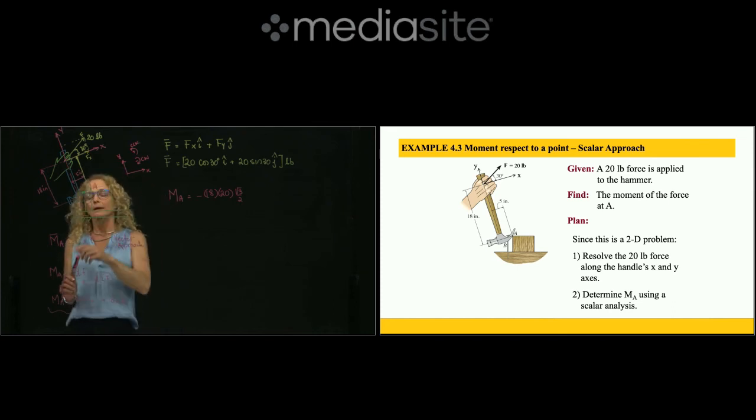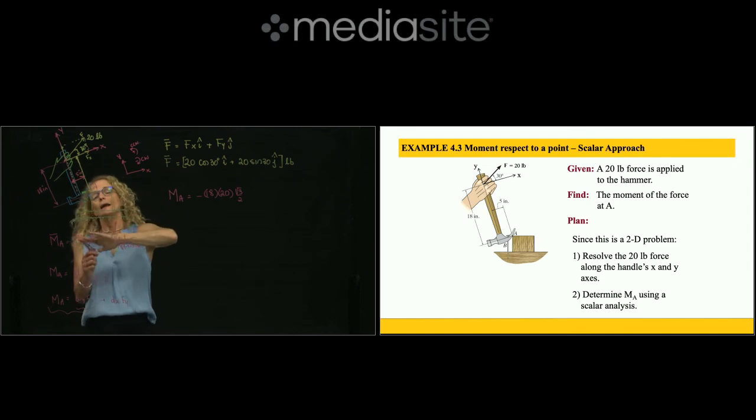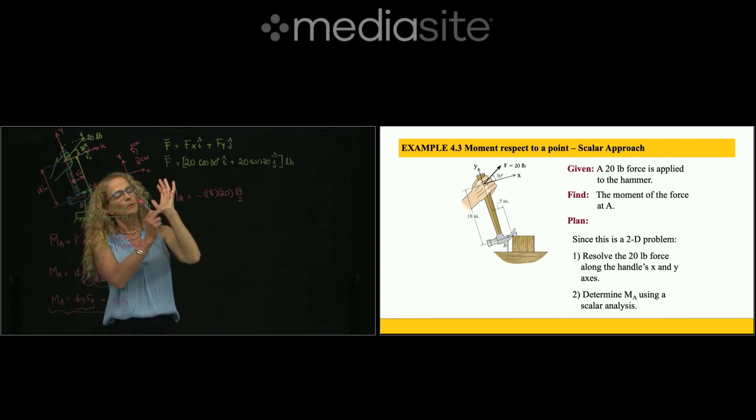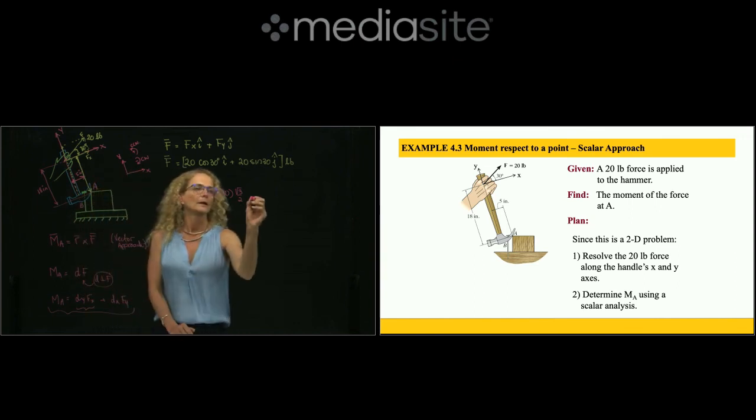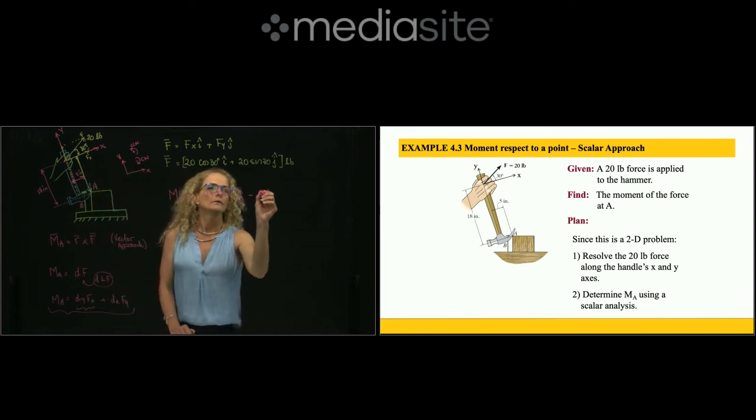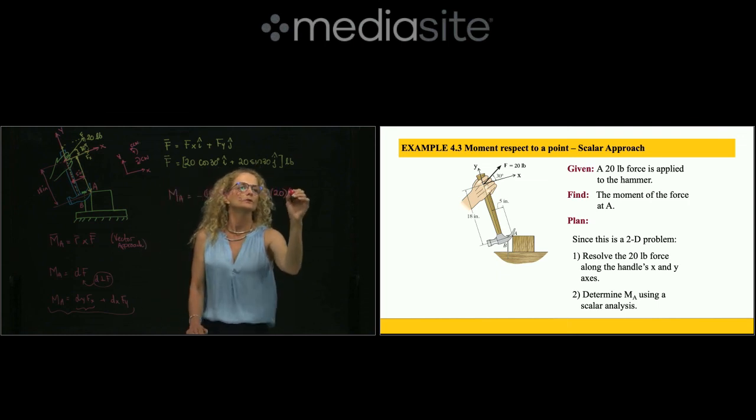Now I have the y component. I slide my force over here and find that the distance is 5 inches. Again, I place my hand here at point A, the distance goes to my palm, and I curl my fingers to the force, and it will also be clockwise. So it will be negative 5 times 20 sine of 30, which is one half.